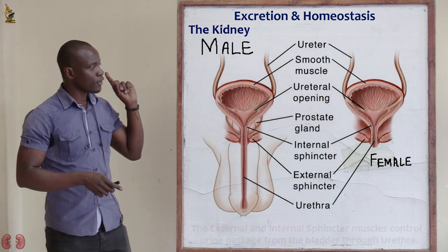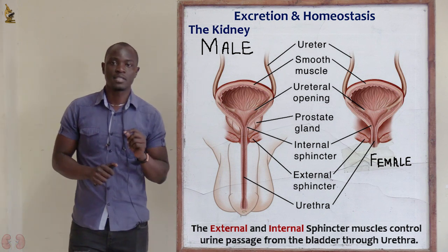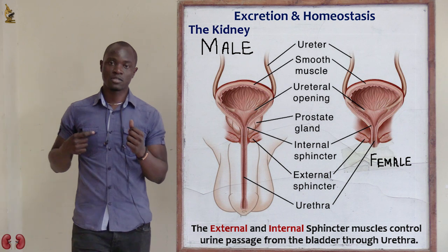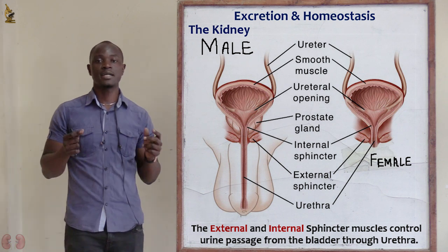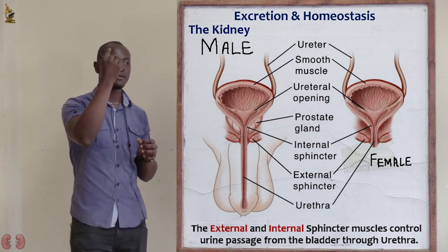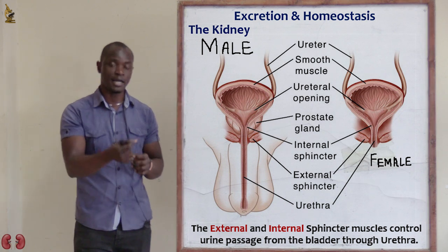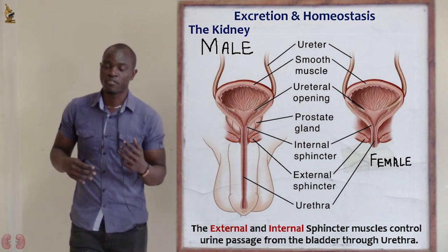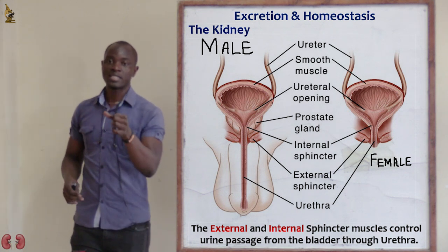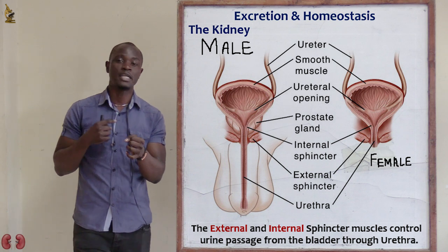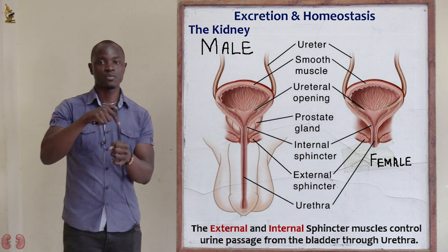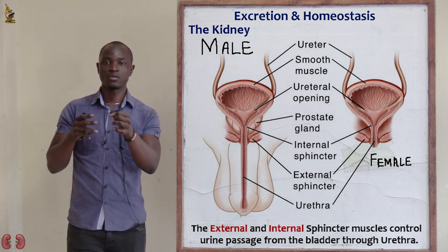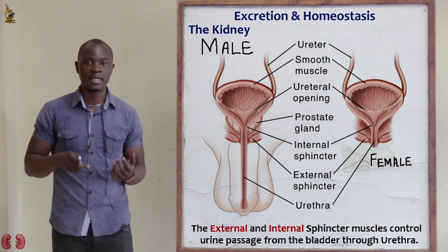There are two sphincter muscles that encircle the urethra. These two sphincter muscles control the release of urine from the urethra. When someone goes to urinate, the sphincter muscles relax and urine is allowed to pass from the bladder through the urethra. The sensation of needing to urinate comes from the sphincter muscles holding the urine tightly in the bladder, and the feeling of relaxation after urinating comes from those muscles having relaxed.